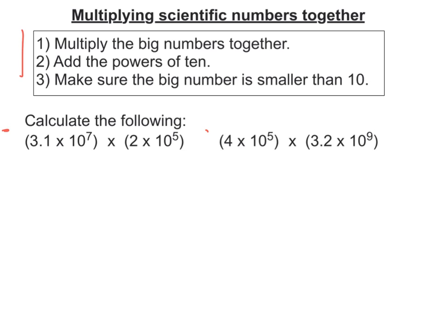So the first thing I do for example 1 is to rewrite it so that I have the big numbers together and then the 10s together, so 10 to the 7 times 10 to the 5.